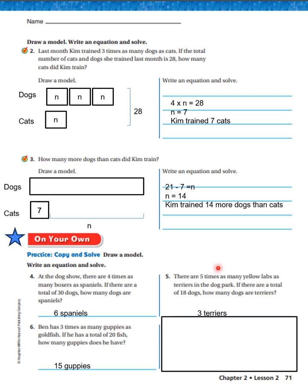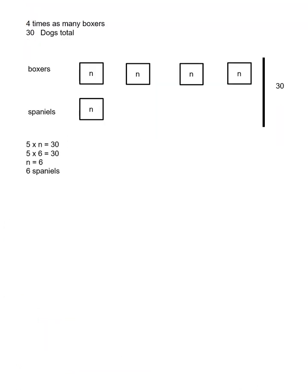Let's look at how problem number four was solved. There were four times as many boxers as spaniels and there are 30 dogs in all. Boxers: four times as many. Spaniels: one. That gives five N's total. Five times N equals 30. Five times six equals 30, so N equals six — a total of six spaniels.